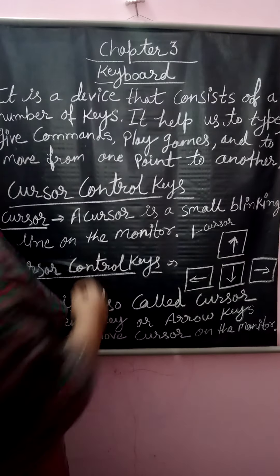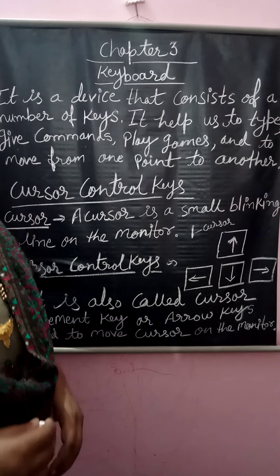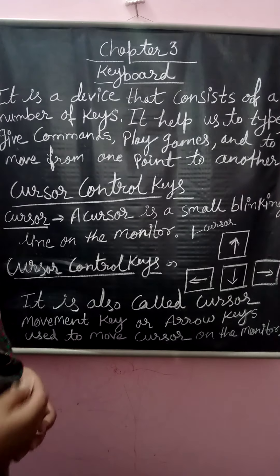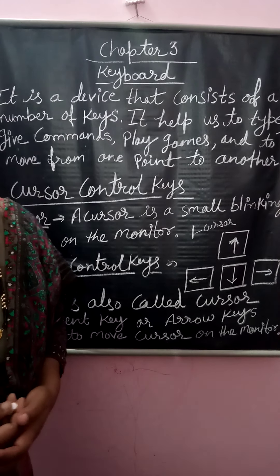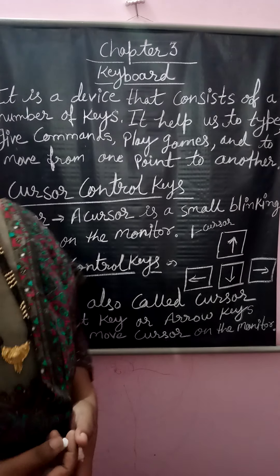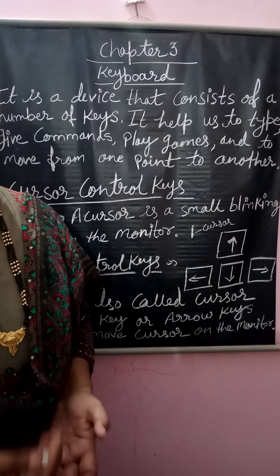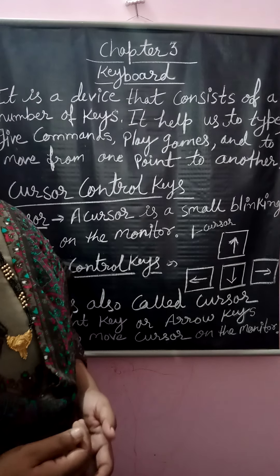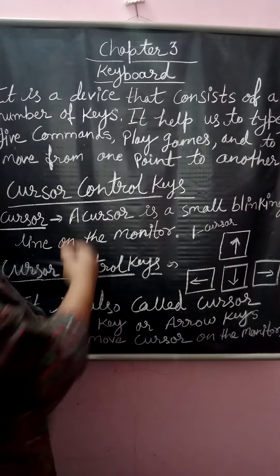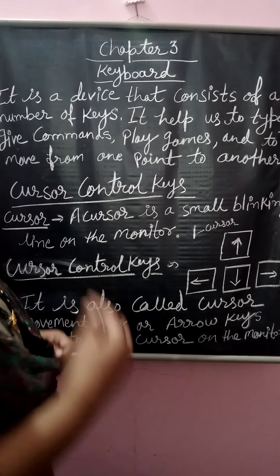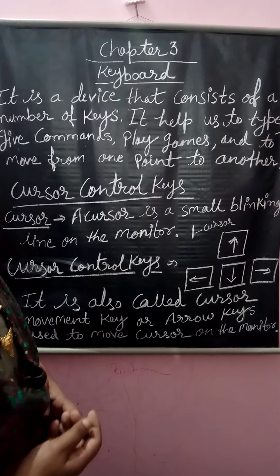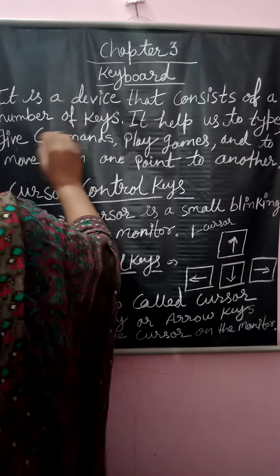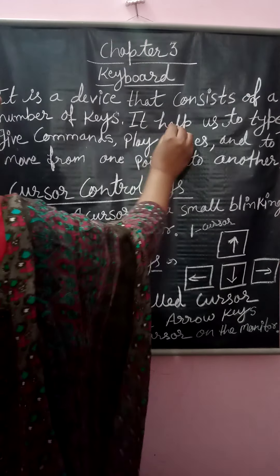Students, today we will start the chapter on the keyboard. We already studied about the parts of the computer — we have a mouse, a keyboard, a CPU, a monitor, UPS, and a printer. Now today we will study about the keyboard: what it is and how it functions for the computer. It is a device that consists of a number of keys.